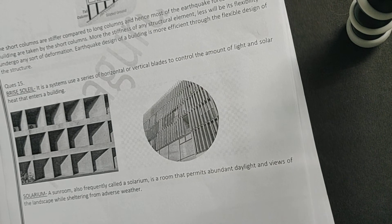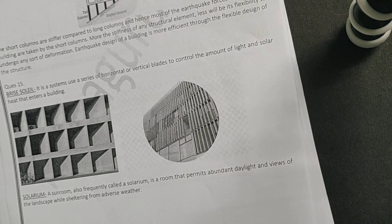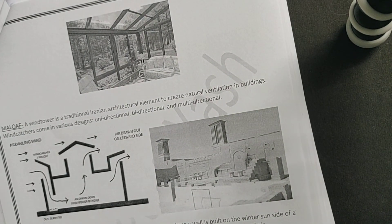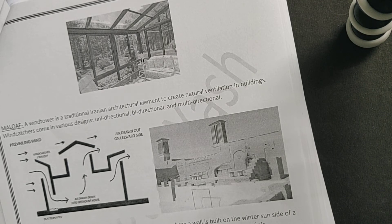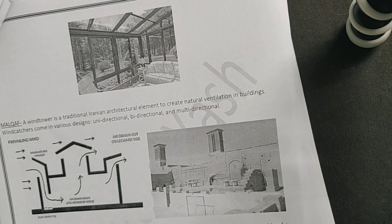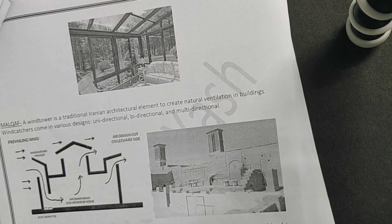The second option was solarium. A sunroom, also frequently called a solarium, is a room that permits abundant daylight and views of the landscape while sheltering from adverse weather. In cold countries where sunlight is scarce, a simple greenhouse effect technique is used — you create a small space or veranda with three or four glass surfaces. When heat comes in, the air inside gets heated and is trapped, and this heat can be utilized.